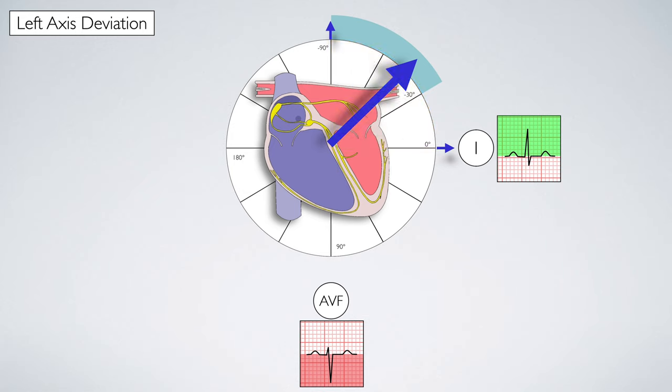But to confirm left axis deviation, we need to be certain that the axis falls between minus 30 and minus 90 degrees. To confirm left axis deviation, we can introduce a further lead, lead two.